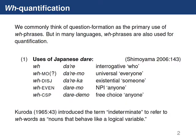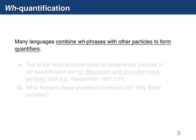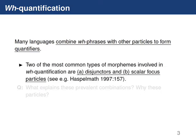Kuroda described these as indeterminate phrases, referring to them as nouns that behave like a logical variable. Many languages combine a WH phrase with other particles to form different quantifiers, and cross-linguistically, two of the most common types of morphemes used for this purpose are disjunctive particles and scalar focus particles. The driving question of today's talk is: what explains these prevalent combinations? Why specifically is it disjunctors and scalar focus particles that show up time and time again across different languages in these WH-particle combinations that give us quantification?